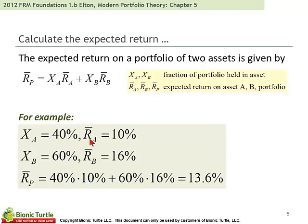Given that setup, the expected portfolio return is a linear weighted average: 40% in asset A plus 60% in asset B. 40% times 10% is 4%, plus 60% times 16% is 9.6%. 9.6 plus 4 is 13.6%. Given the expected returns and relative weightings, we should be able to do this fairly quickly — practice if needed.